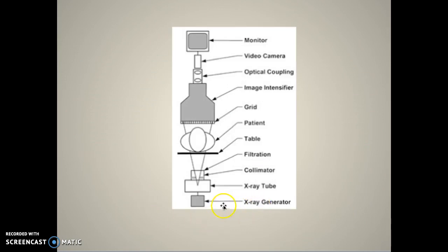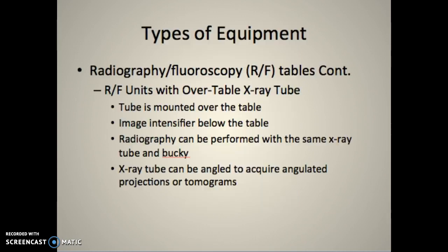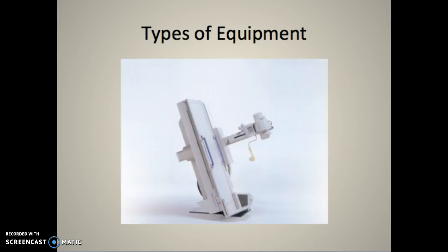The general layout includes a generator, X-ray tube, collimator, filtration, a carbon fiber or radiolucent table, the patient, the image intensifier, and a video camera with optical coupling or CCD feeding to a monitor. There's also an over-the-table unit where the X-ray tube is mounted over the table and the image intensifier is within the table. These are very hard to shield with any drape and have pretty high exposure, so be careful. You can angle the tube on these, and it's important to bring in a portable shield.